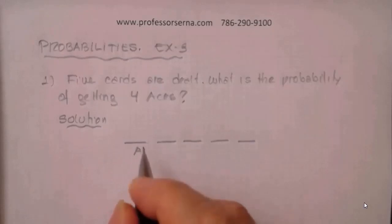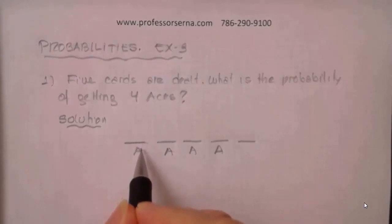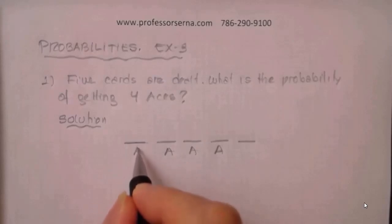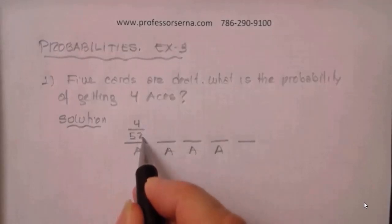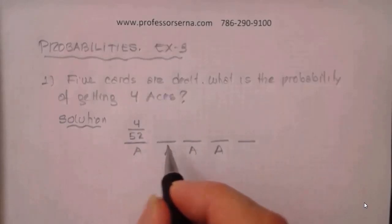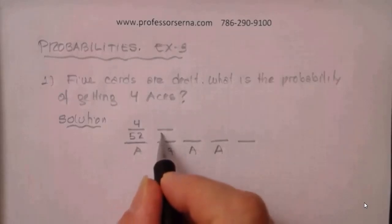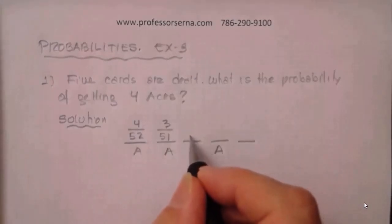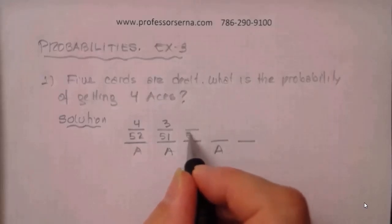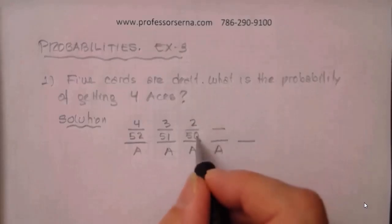We want an ace, and ace, and ace, and ace. What is the probability the first card is an ace? It's 4 out of 52, because we have four aces and 52 cards. Once we have the first ace, the probability the second is also an ace is 3 out of 51. Similarly, the third ace has probability 2 out of 50.